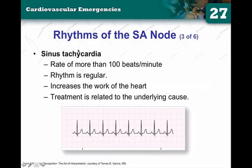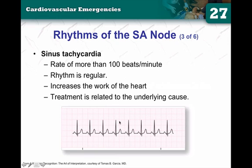Sinus tachycardia is just the opposite of sinus bradycardia. Everything walks out — there's a P wave before every QRS complex, R-to-R's walk out, minimal variation — except that the rate is greater than 100. That would be a sinus tachycardic rhythm. Notice we don't say 'normal' sinus tachycardia because it's not normal. The heart is just beating too fast, but we know it's sinus tachycardia because we have upright and rounded P waves.